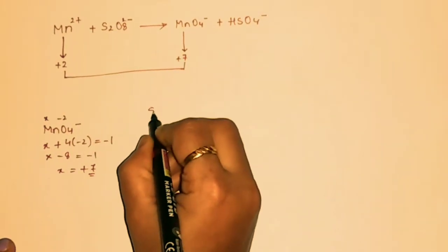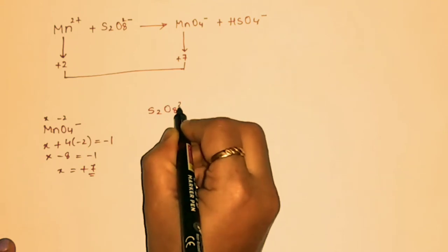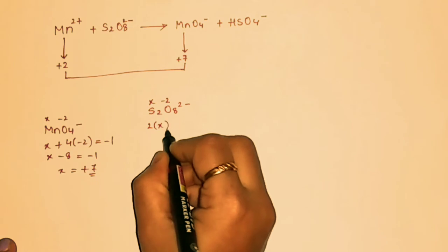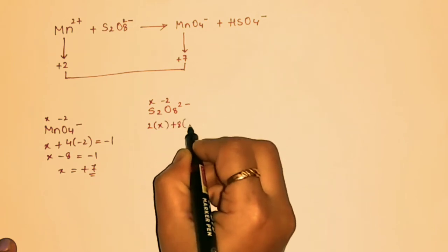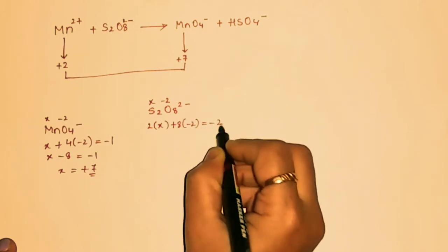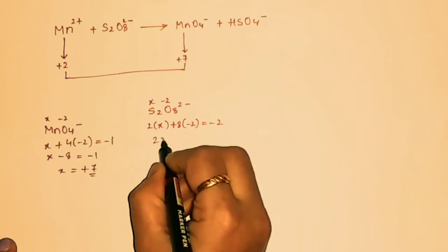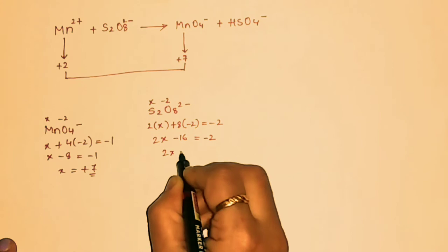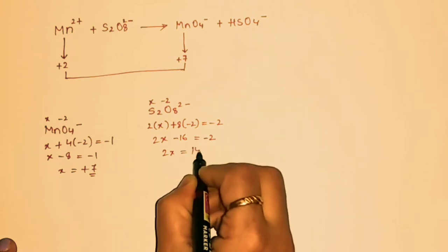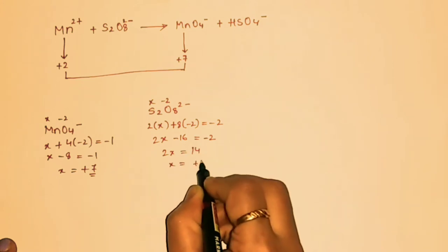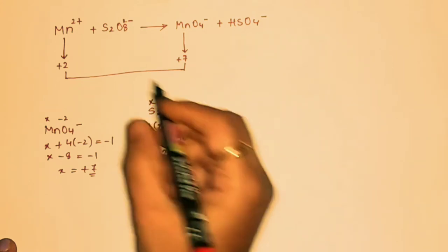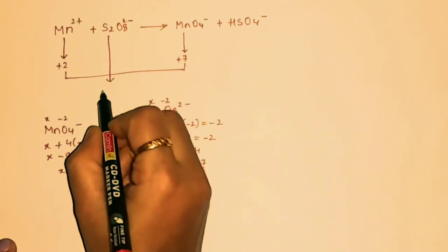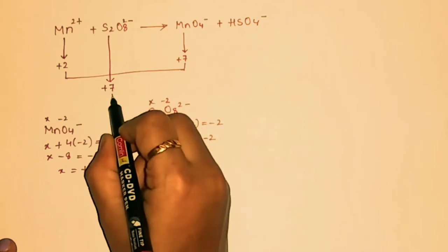Now let us find the oxidation number of sulfur in S₂O₈²⁻. Let x be the oxidation number: 2x + 8×(−2) = −2, so 2x − 16 = −2, giving 2x = 14, therefore x = +7. The oxidation number of sulfur in S₂O₈²⁻ is +7.